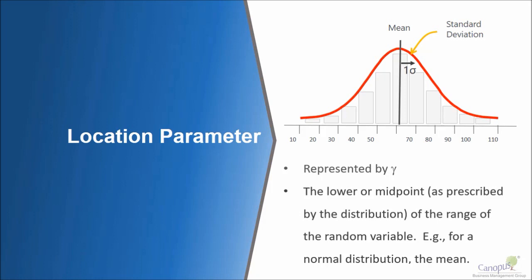The location parameter, as I mentioned earlier, is represented by gamma. The location parameter primarily talks about the place where the distribution is placed. If you assume that the x-axis to be a continuum which has values anywhere between minus infinity to plus infinity.